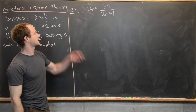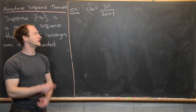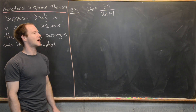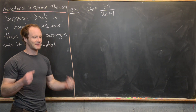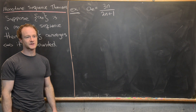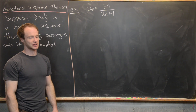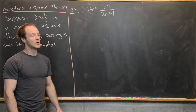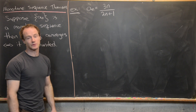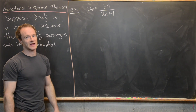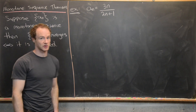The first sequence I want to look at has the nth term given by 3n over 2n plus 1. We'll use the monotone sequence theorem to show that this sequence converges. Generally at this point in this type of course, the only way to actually find the limit is via the epsilon-n definition of the limit. In the future we'll unlock tricks from calculus 2 to see this limit equals 3 halves, but those are not available to us yet. So all we can do is show that the sequence converges.